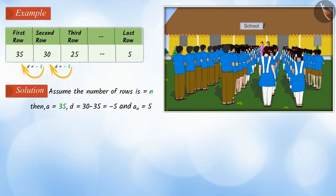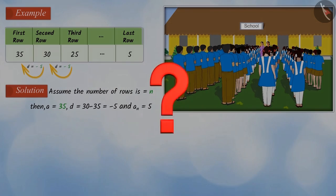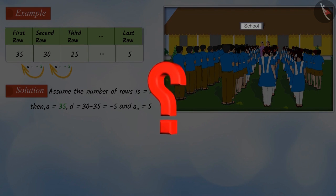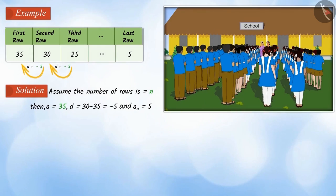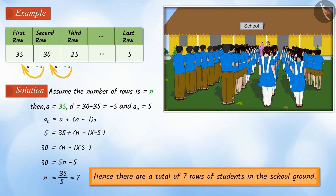We have to find the number of rows of students. Therefore, we have to find the value of n. Can you tell me how will we do that? Well done! Looking at the pattern formed above, using the general form of AP, we can solve the problem and obtain the value of n to be equal to 7. Hence, there are a total of 7 rows of students in the school ground.